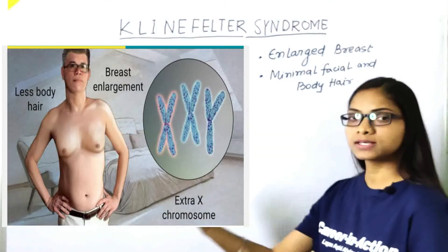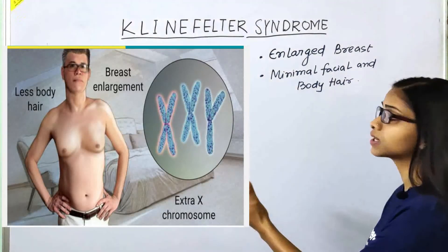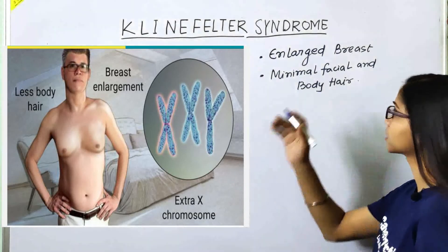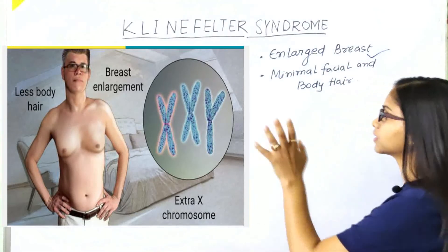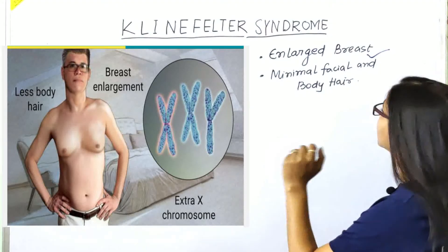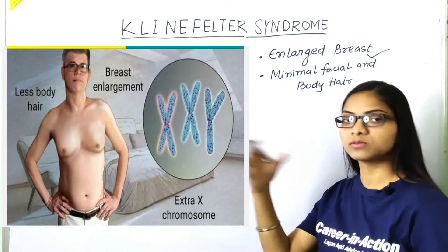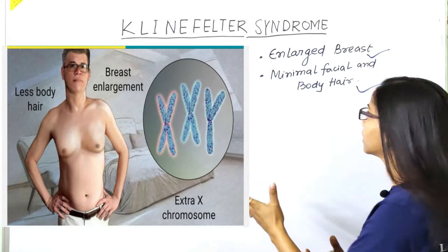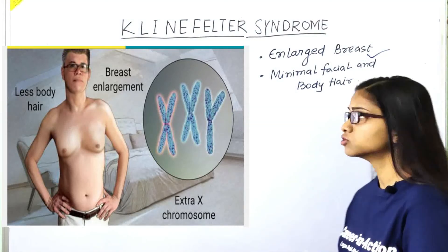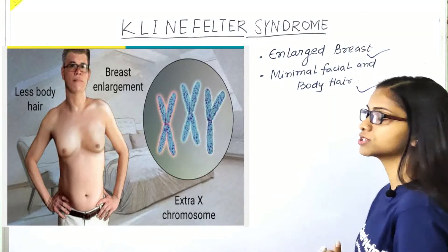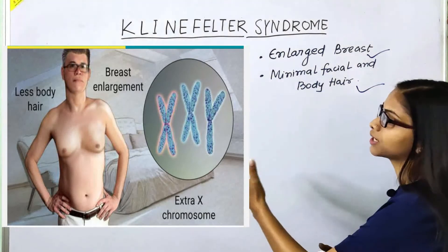In this diagram, it will be shown in this way. You are seeing enlarged breasts — you can see how enlarged the breasts are. The second one is minimal facial and body hair. The facial hair and body hair are less. This should normally be present in the male. You can easily understand these things in the diagram.